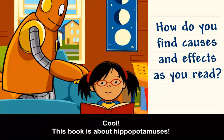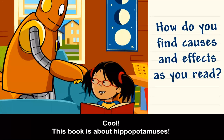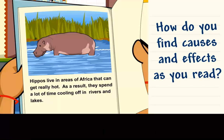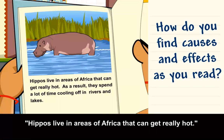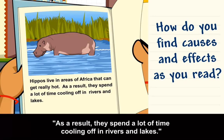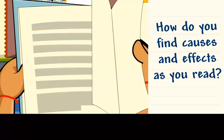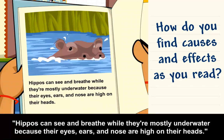Cool! This book is about hippopotamuses. Hippos live in areas of Africa that can get really hot. As a result, they spend a lot of time cooling off in rivers and lakes. Hippos can see and breathe while they're mostly underwater because their eyes, ears, and nose are high on their heads.